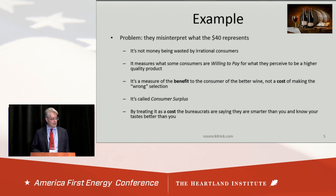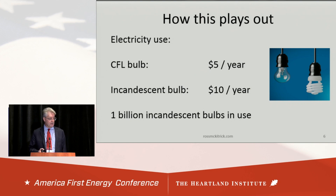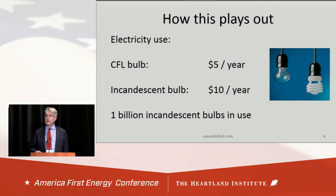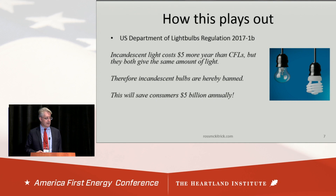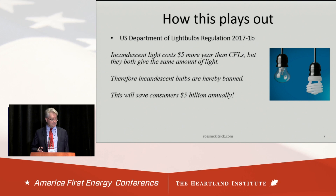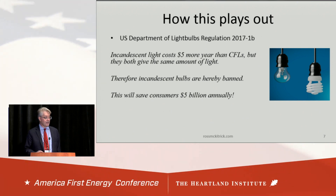Here's how it plays out in a more practical example. We have two light bulbs here. A compact fluorescent bulb, which in my example might use $5 per year of electricity, and an incandescent bulb, which might use $10 a year of electricity. We'll say there's a billion of these bulbs in use. So what the experts in the government will say is: the incandescent bulb costs $5 more per year than the compact fluorescent, but they both give the same amount of light. So we're going to ban the incandescent bulb, and this will save consumers $5 billion a year. You're welcome.